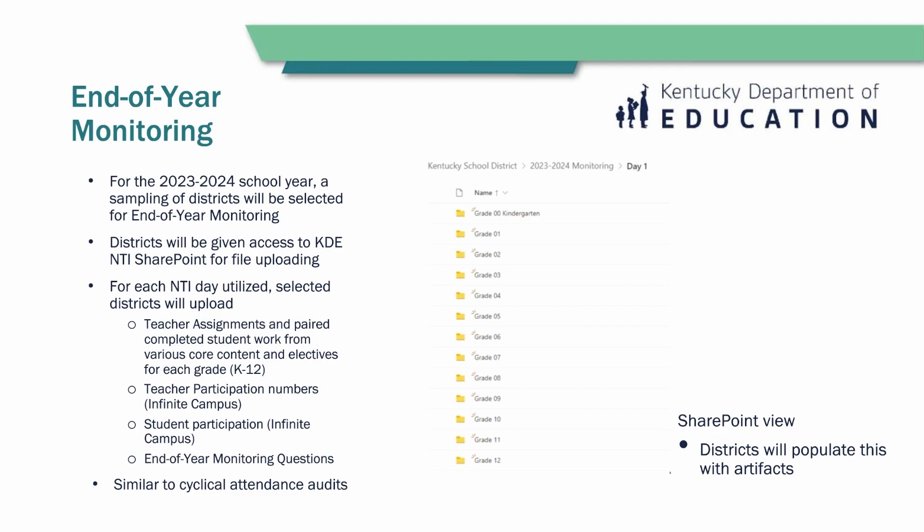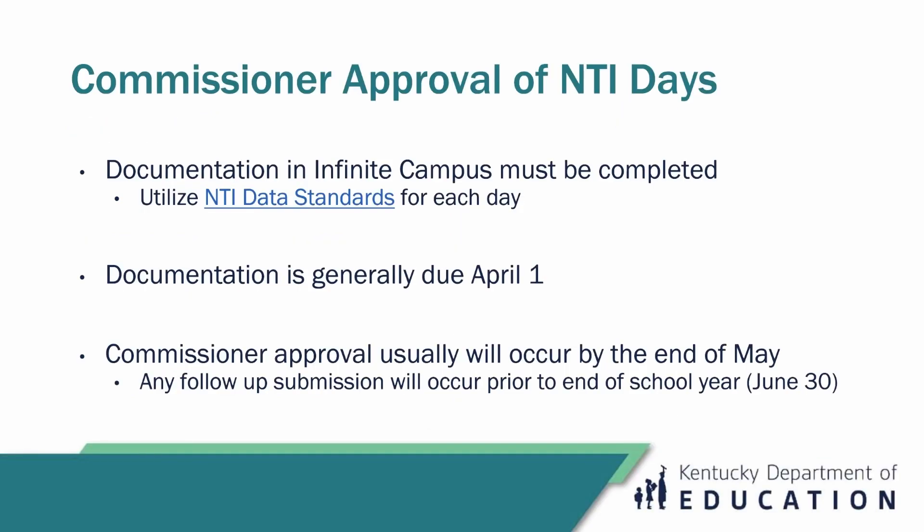This is all similar to cyclical attendance audits. After everything has been submitted, the commissioner will approve NTI days if everything has been completely entered in Infinite Campus and end of year monitoring has been completed. Documentation in Infinite Campus must be completed by April 1st. The commissioner's approval usually occurs by the end of May, and any follow-up submissions will occur prior to the end of the school year by June 30th.